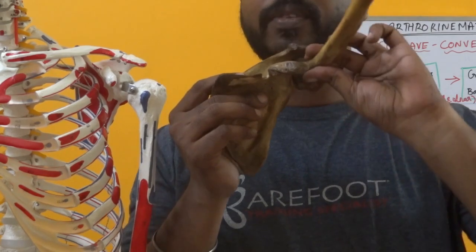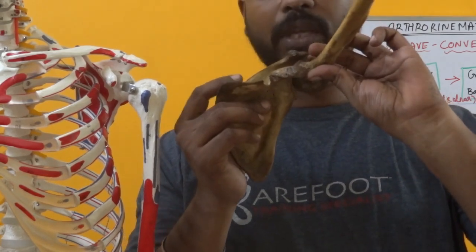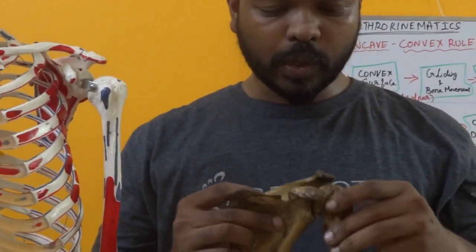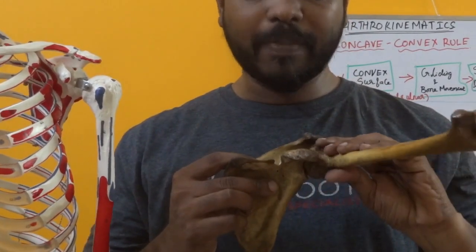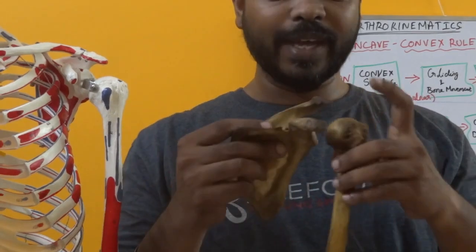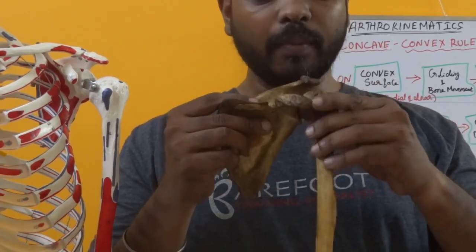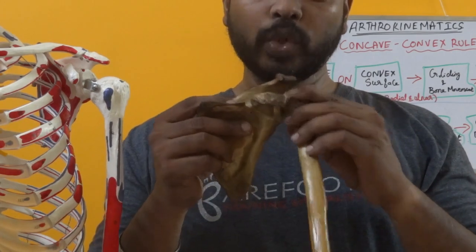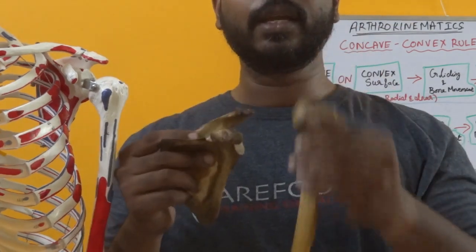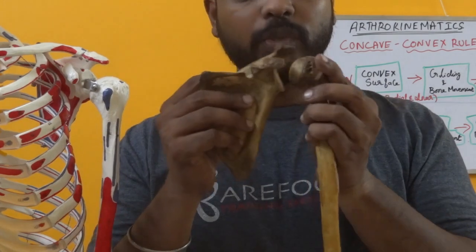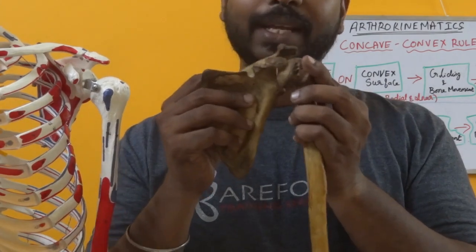If you need to improve the flexion of the glenohumeral joint, the ball rolls back — the bone moves forward while the convex surface moves backward. That is nothing but posterior gliding. So perform posterior glides to improve glenohumeral flexion.